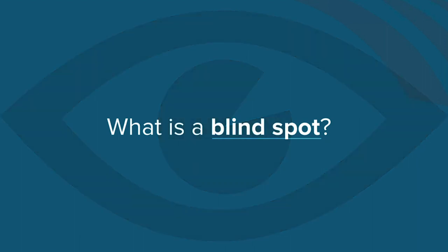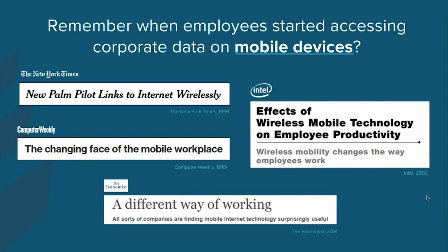But this is not the first time that there have been these kinds of blind spots in environments like this. If we think back to the late 90s, when email started getting delivered to personal mobile devices, and when employees started getting access to corporate data on mobile devices — this was not really possible until the late 90s. And when that started happening, there was so much excitement. People talked about how that changed their way of working, and they could work from anywhere, all the time, from a mobile device.